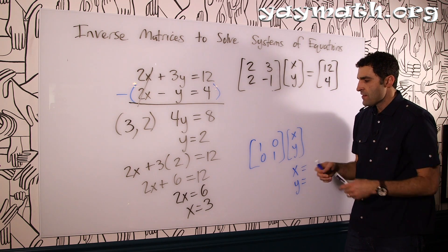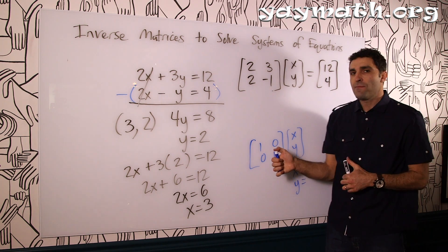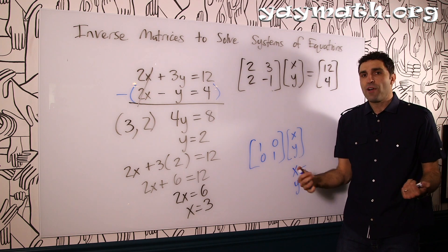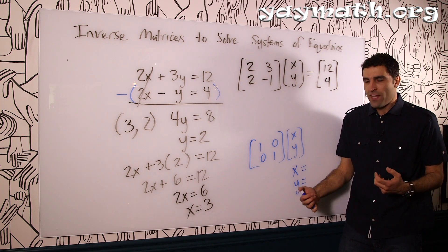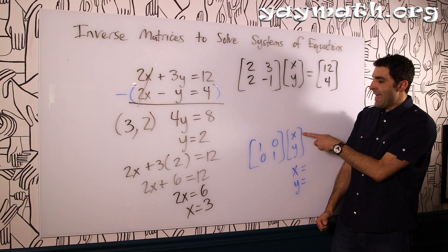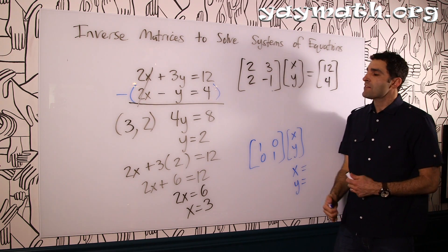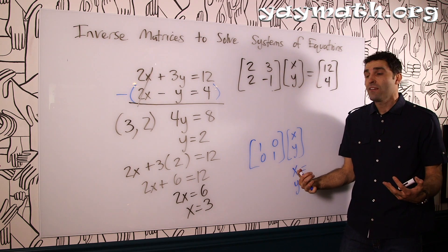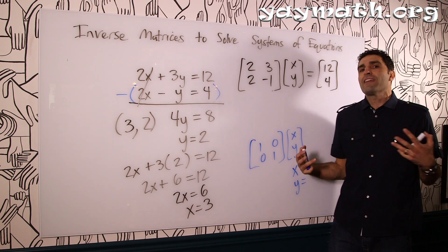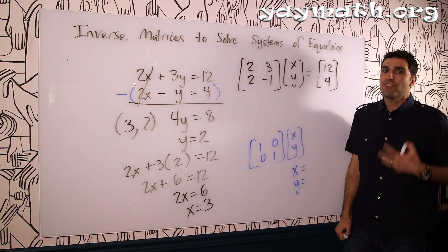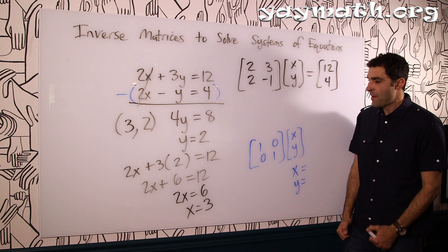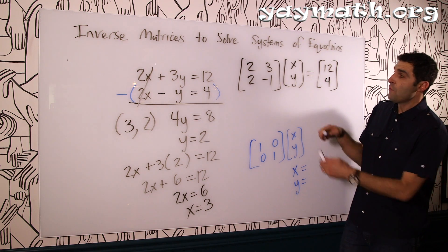And I always remind students like what identity means in terms of math. The identity property is basically something that doesn't change. So like, what is the identity of x and y? It's just x and y. It's not anything multiplied by x and y or anything changing x and y's core identity. I am who I am, and I'm not going to change. That's my identity.